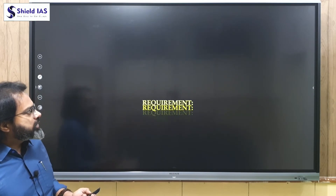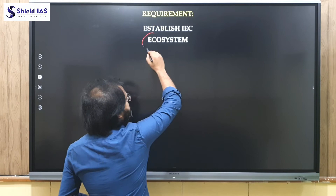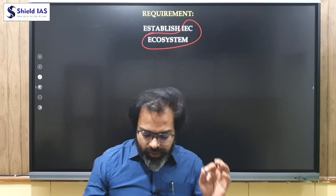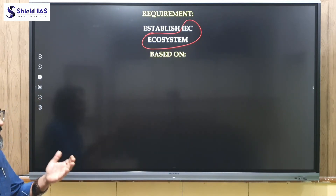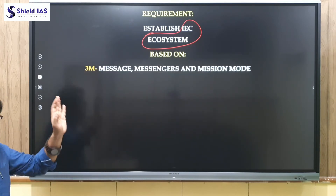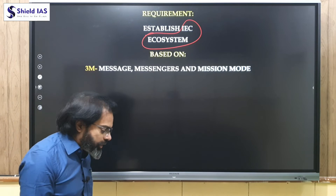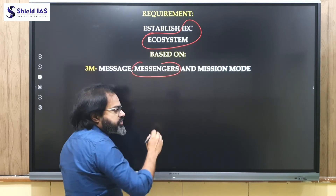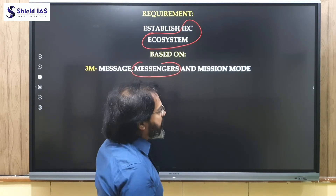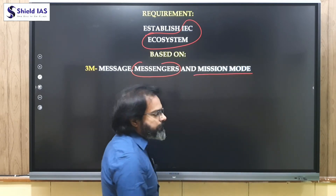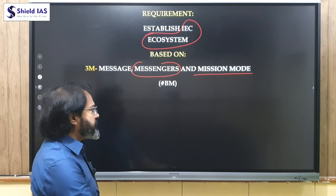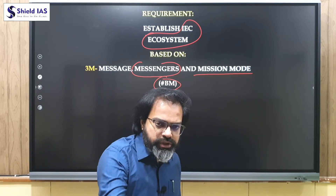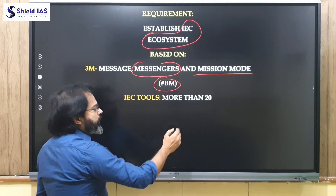A proper and comprehensive IEC ecosystem is required to be established. The method should be based on the 3M formula: creating right messages in a sustained manner, identifying different stakeholders as messengers to promote and percolate that message, and doing this on mission mode — sustained mode — because our purpose is behavior modification. There are more than 20 IEC tools which can be applied and can connect with any individual in society.